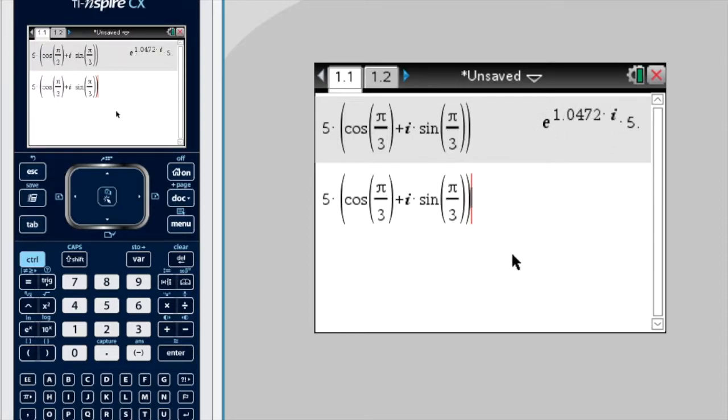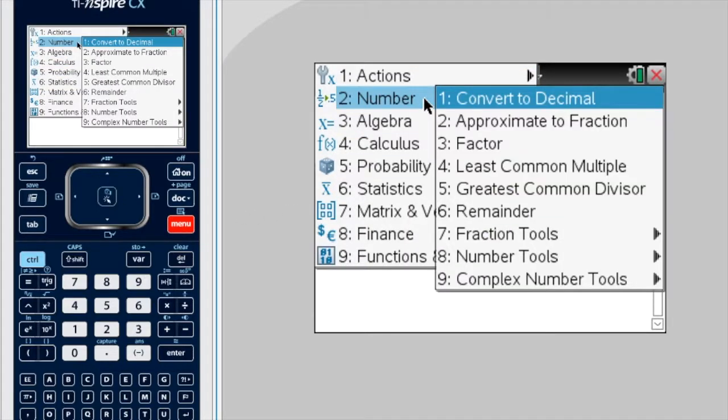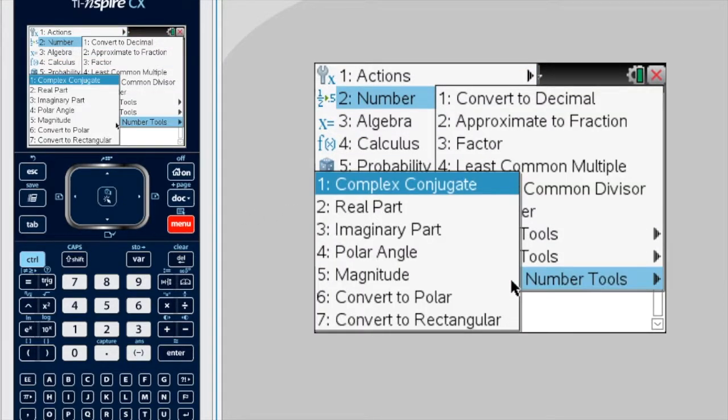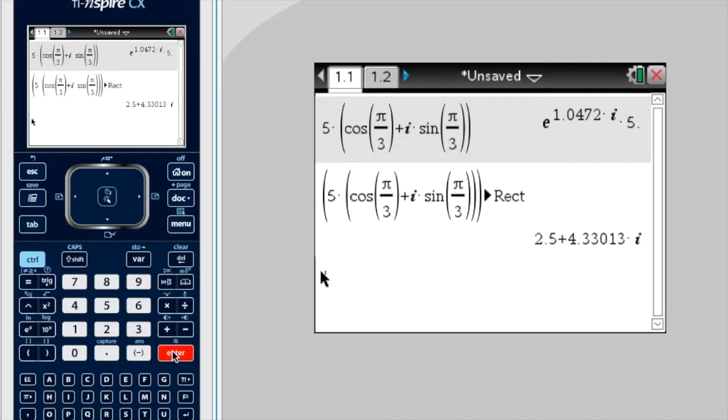Now, if I want to convert that to rectangular form though, I press menu, number, complex number tools, rectangular, enter, and there's the equivalent complex number but in rectangular form.